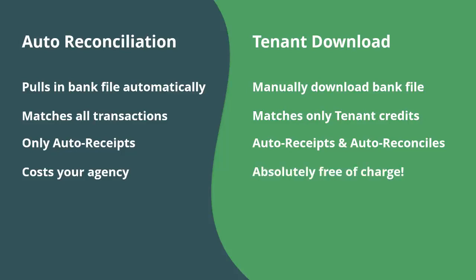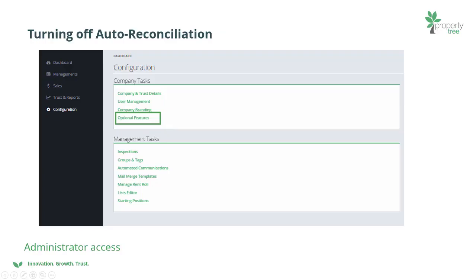Auto rec costs your agency 12 cents for every transaction processed by the feature, whereas tenant download is at no charge to your agency to activate, nor is there any charge to use. Before you make the decision to turn off your auto reconciliation and turn on tenant download, please consider these points.